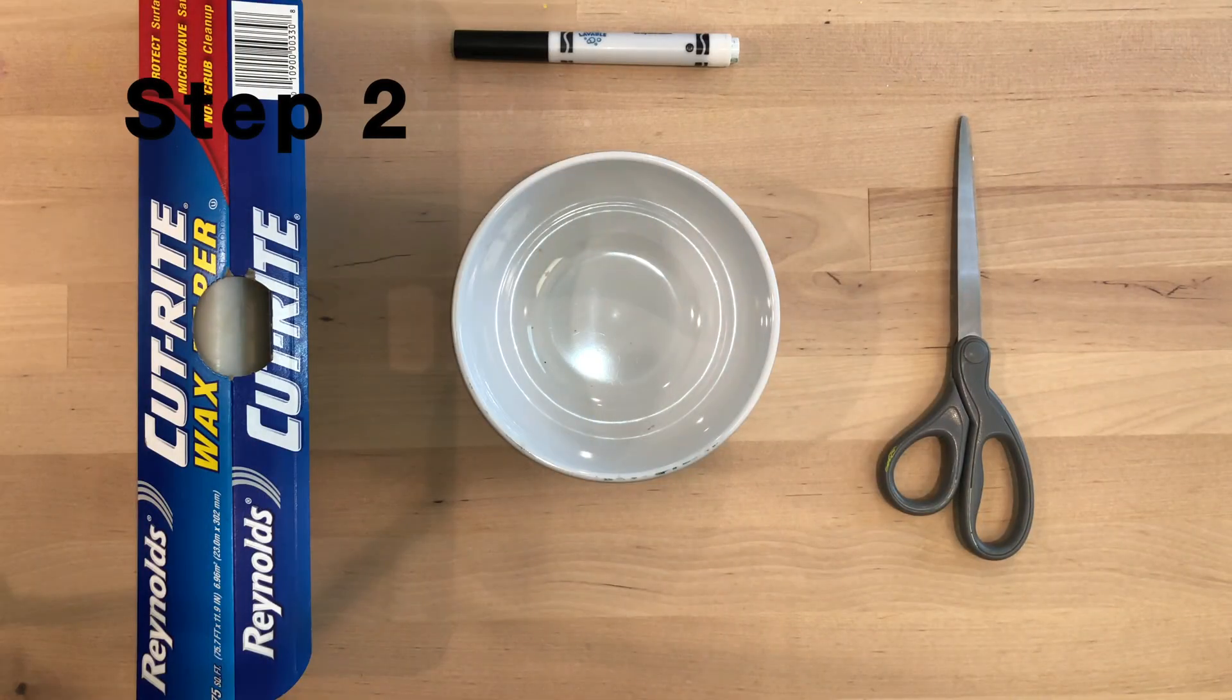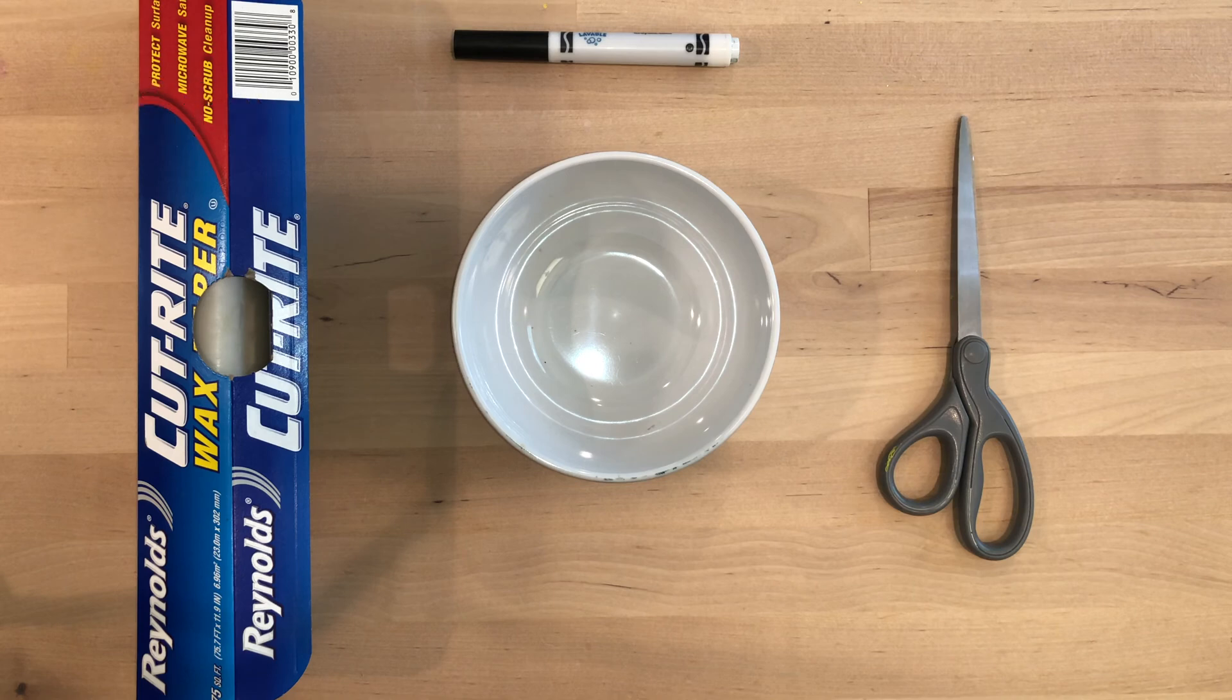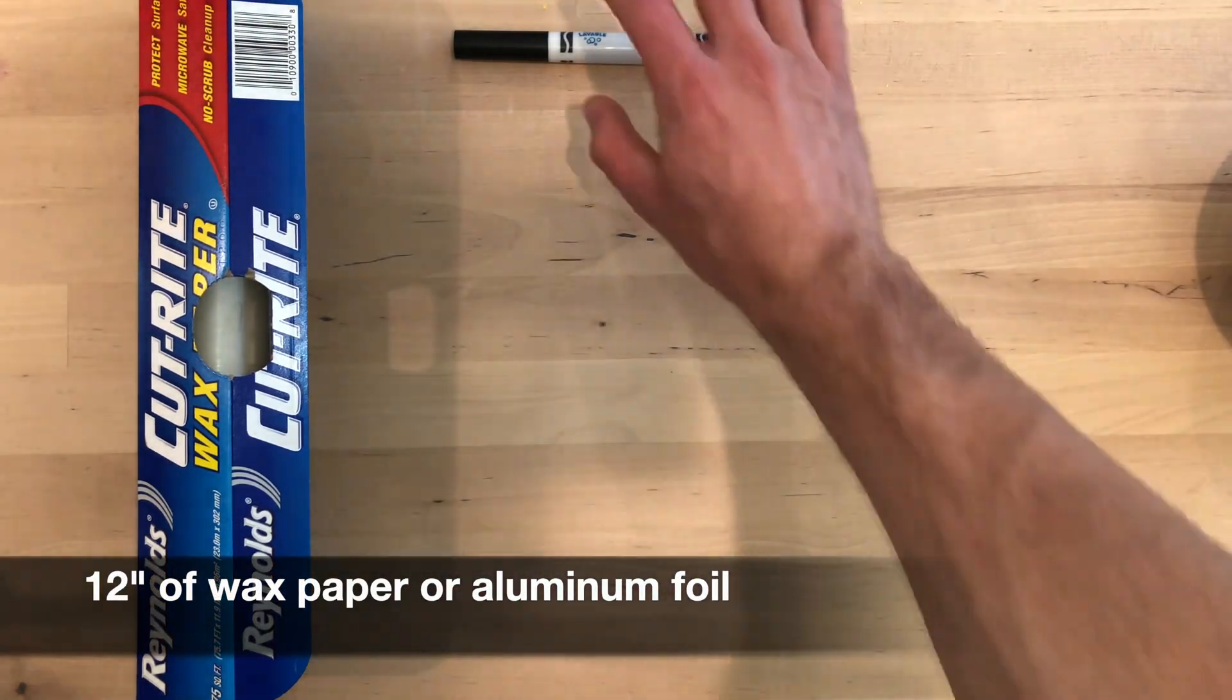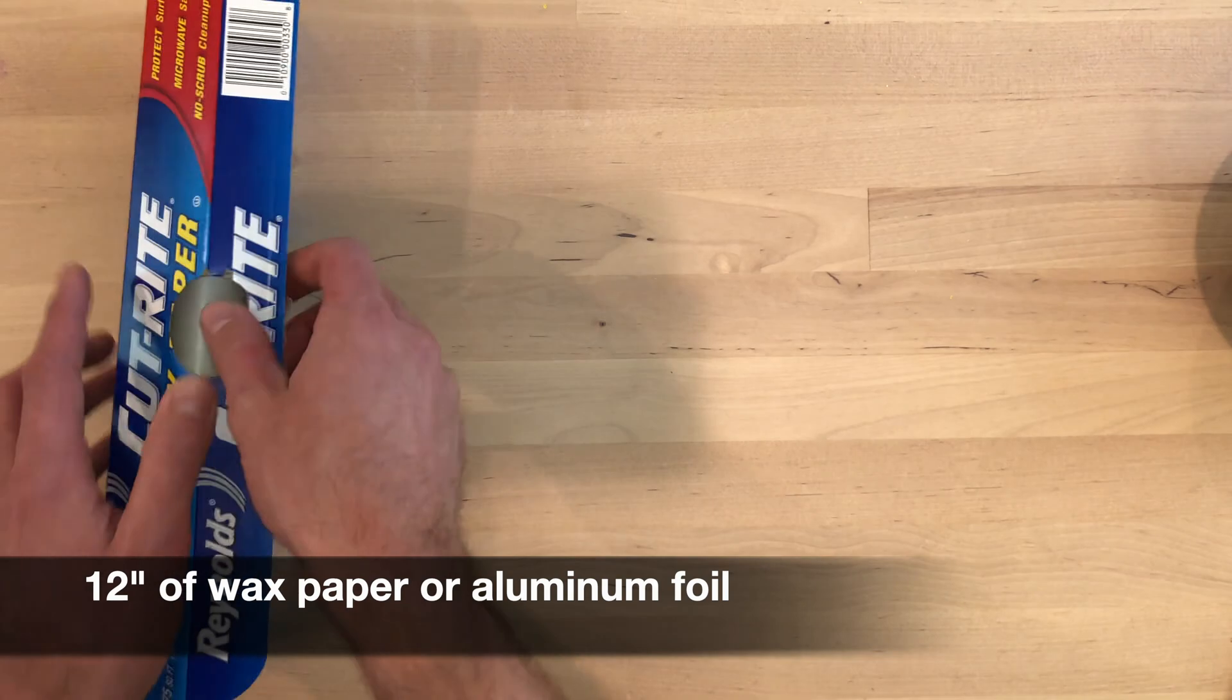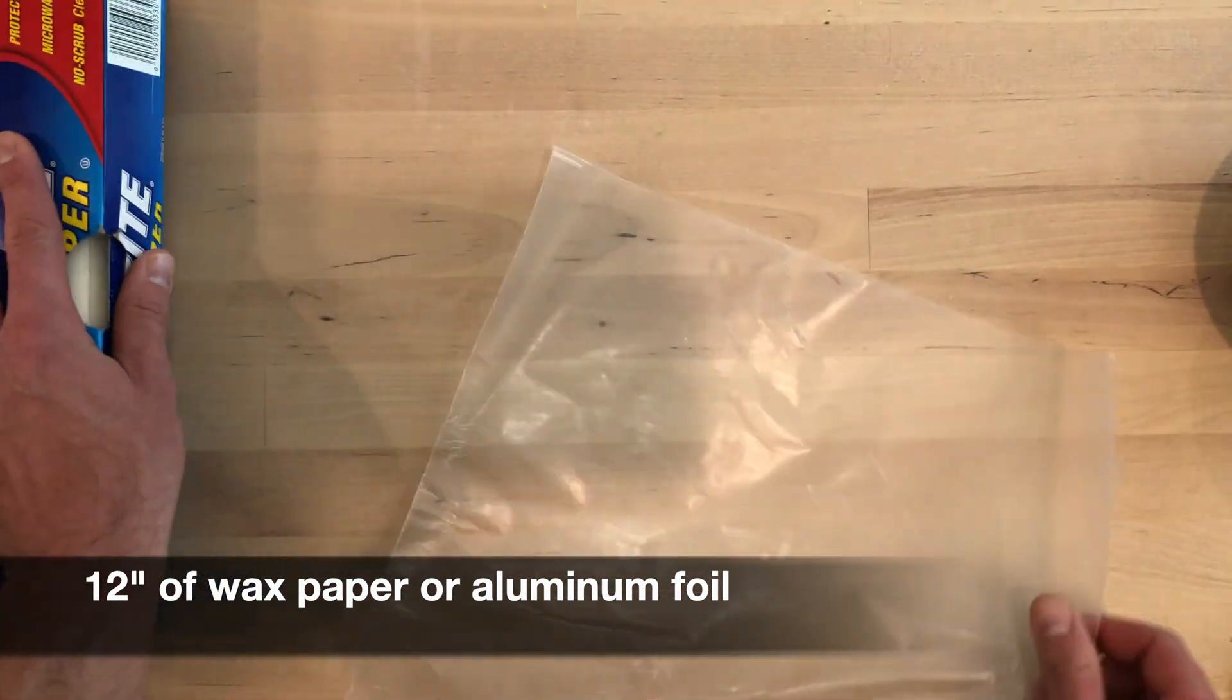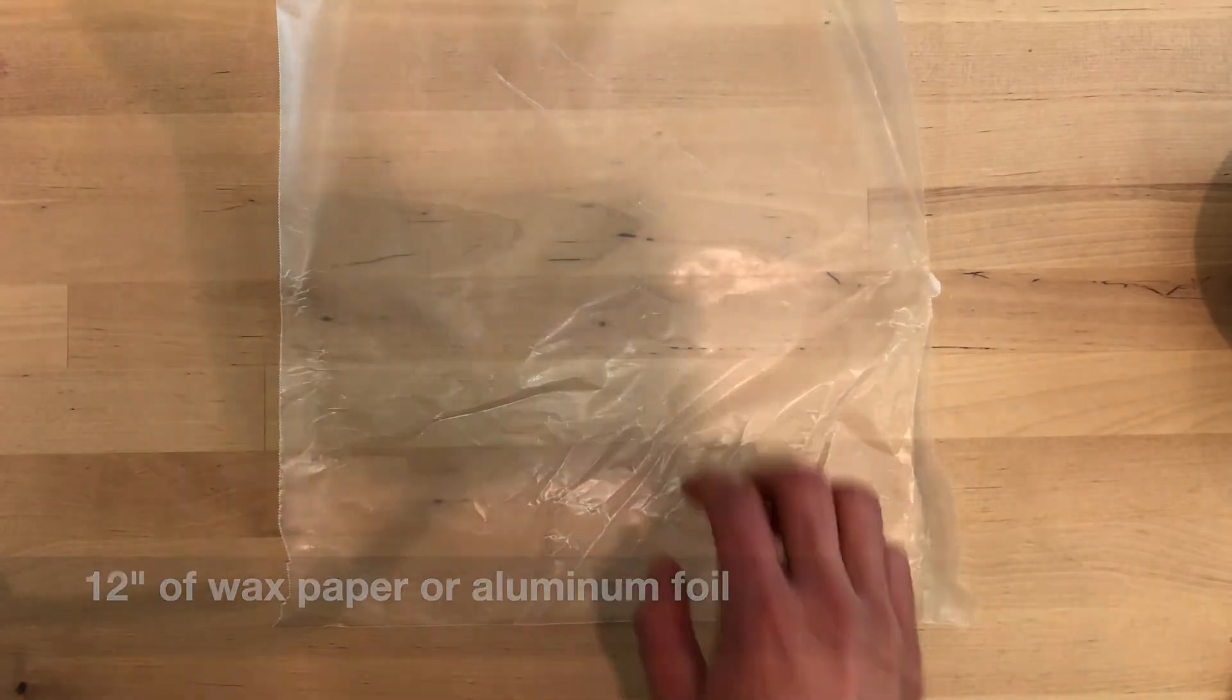Step 2. We need to create our membrane or resonator. For my membrane, I'm going to use wax paper. If you don't have wax paper available, you can try using parchment or aluminum foil. I've got about a 12 inch sheet of wax paper here.